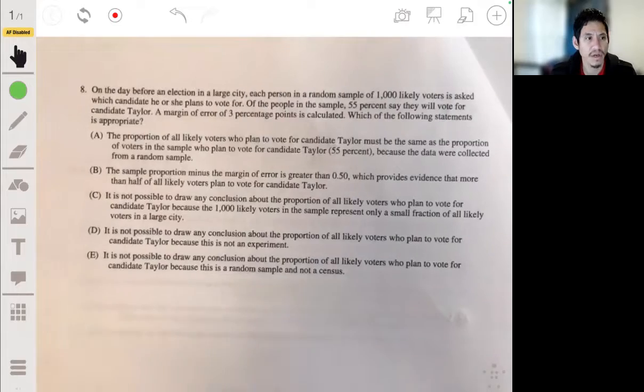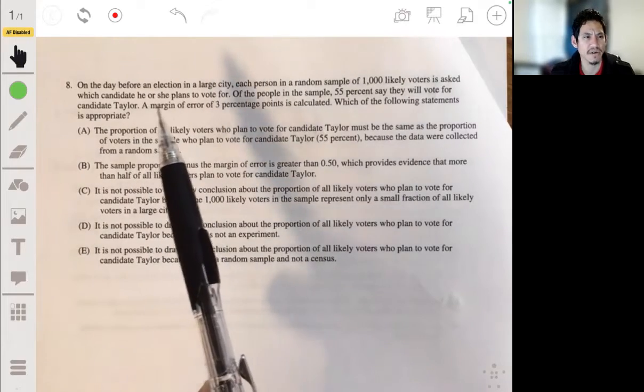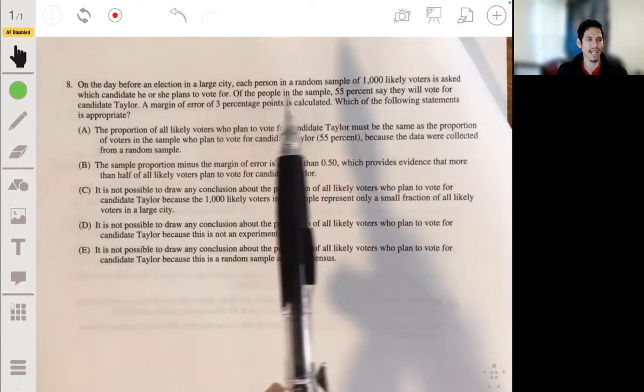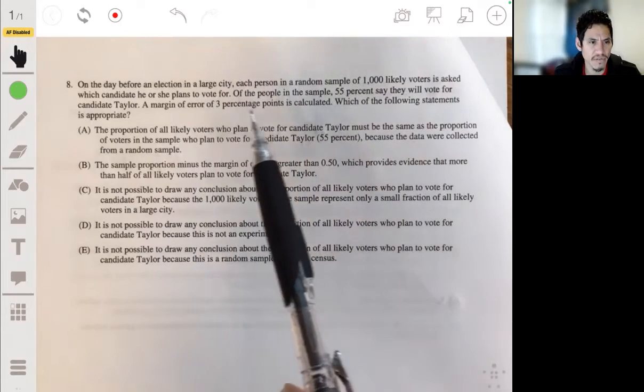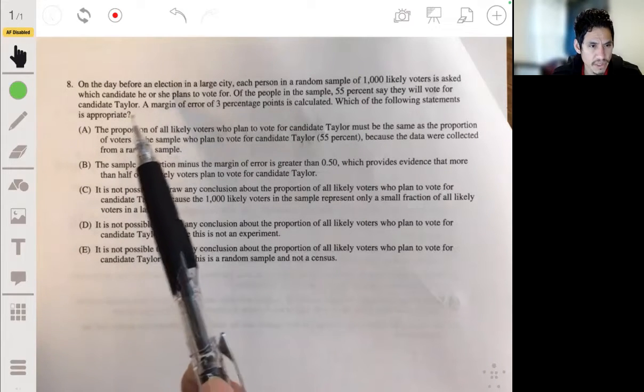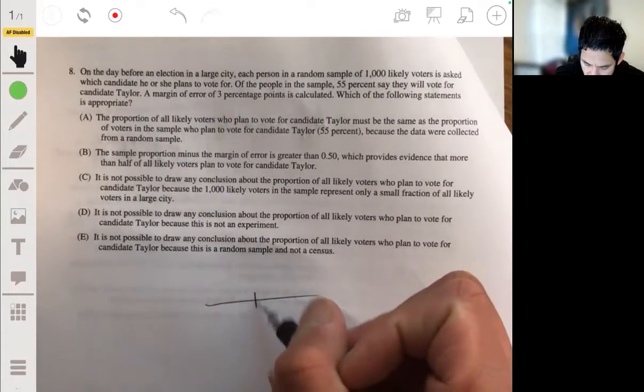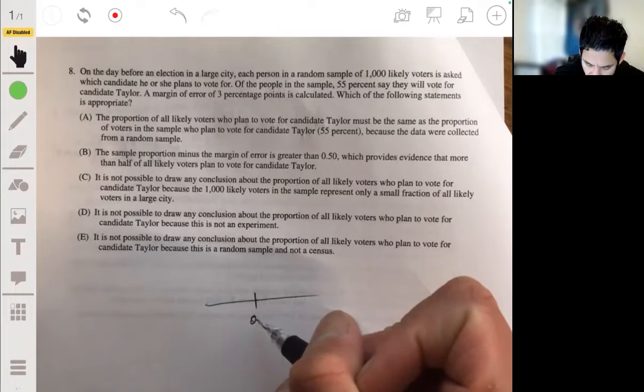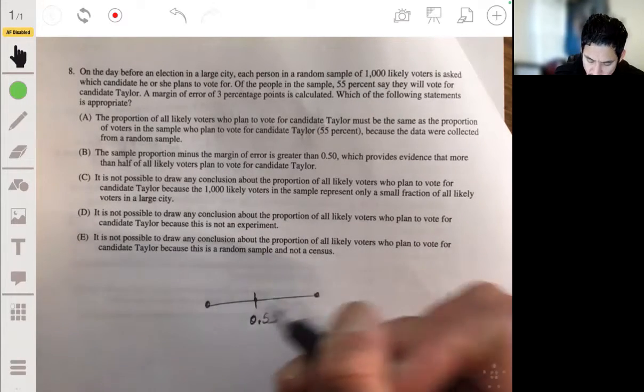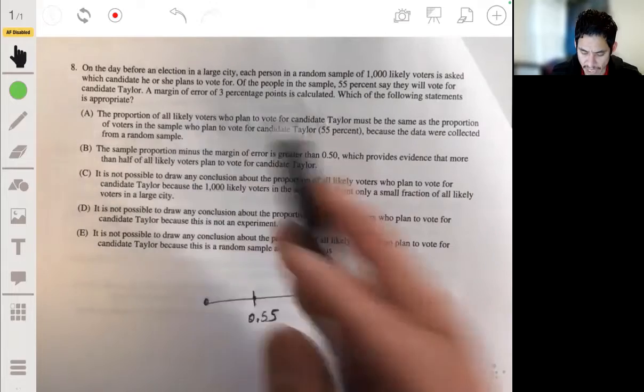Problem eight. On the day before an election in a large city, each person in a random sample of 1,000 likely voters is asked which candidate he or she plans to vote for. Of the people in the sample, 55% say they will vote for candidate Taylor. A margin of error of three percentage points is calculated. Which of the following statements is appropriate? Okay, so let's remember what this margin of error is. It's centered at 55%, so our point estimate is 55%, or let's just say 0.55 proportion. Our point estimate is 0.55, and the margin of error basically is like a plus or minus from this point.